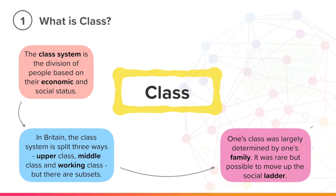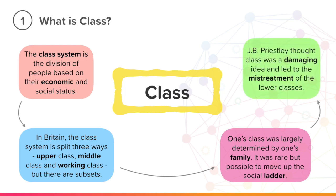J.B. Priestley thought class was a damaging idea and led to the mistreatment of the lower classes. To Priestley, if people are given more wealth and power, they will nearly always use it wrongly and fail to take on any social responsibility.